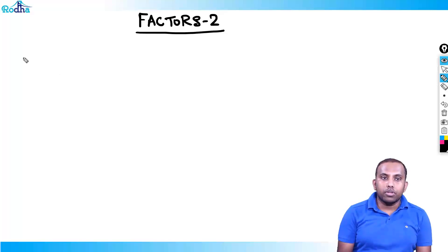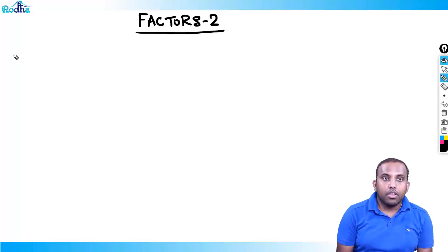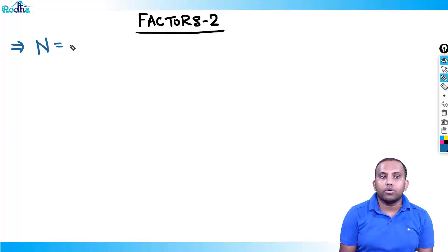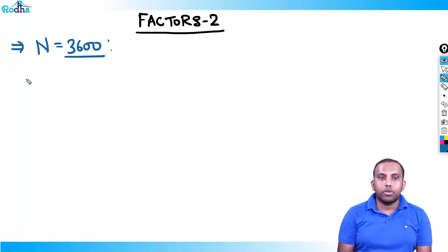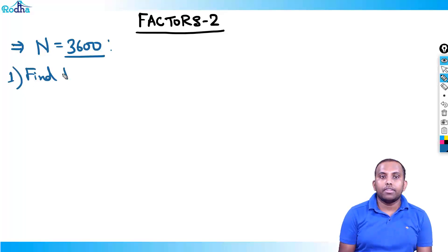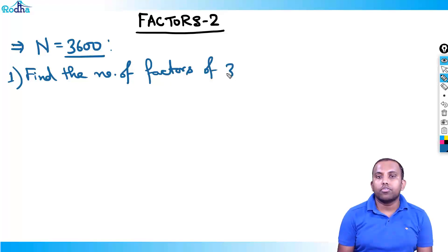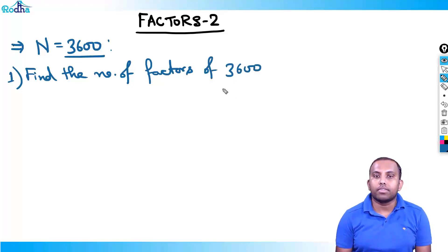In Factors Part 2, we will start with a number n = 3600 and do a variety of questions on it. So let's take n = 3600. My first question will be: find the number of factors of 3600.